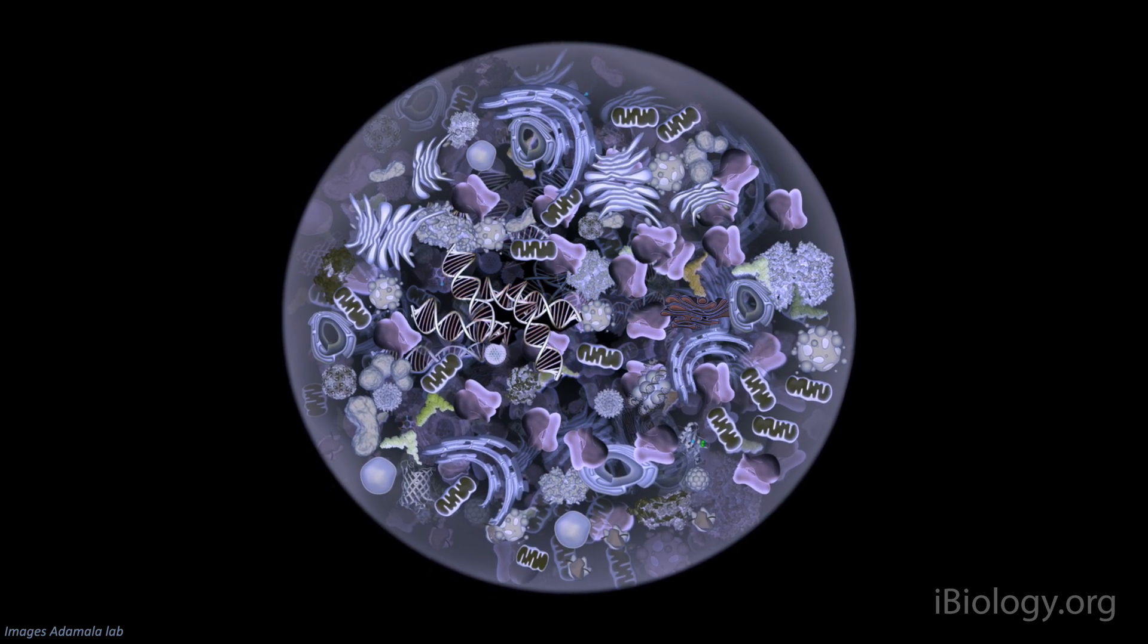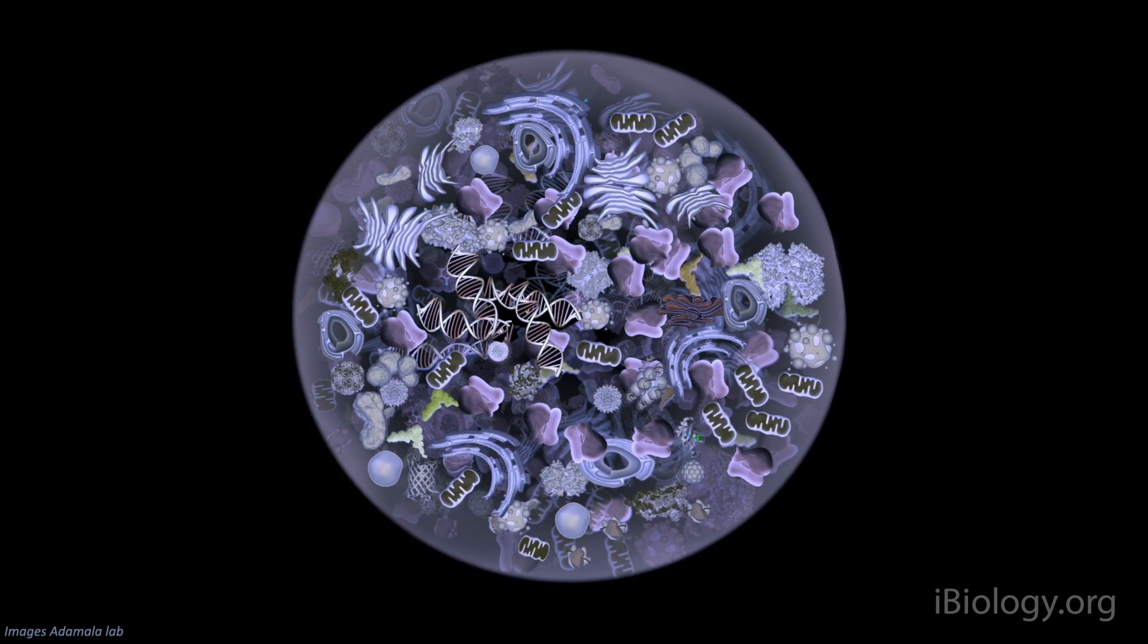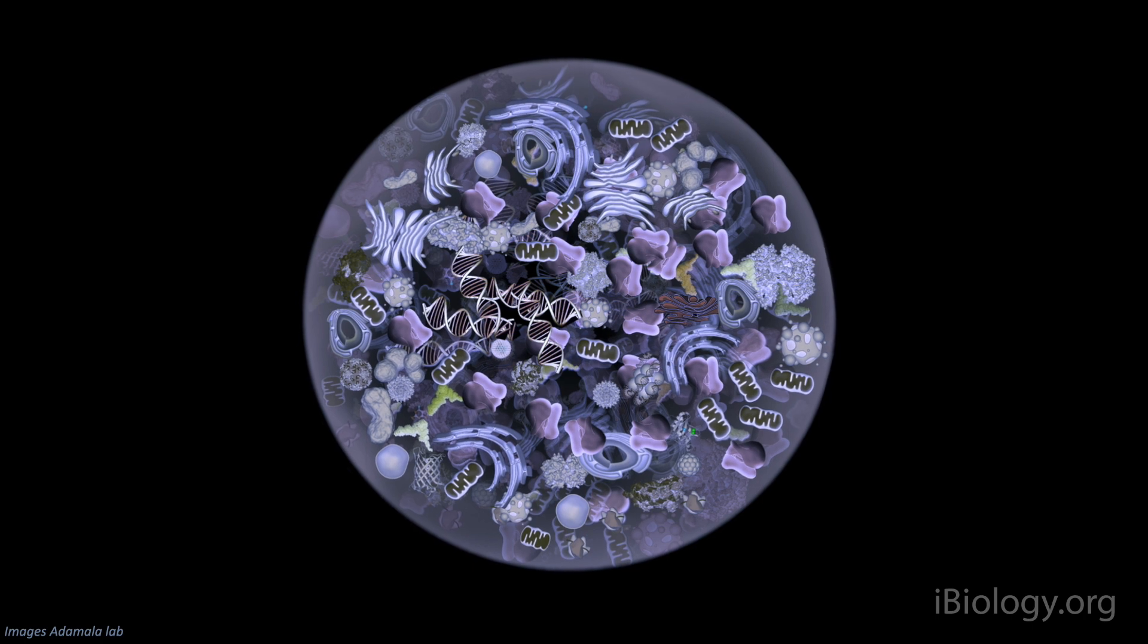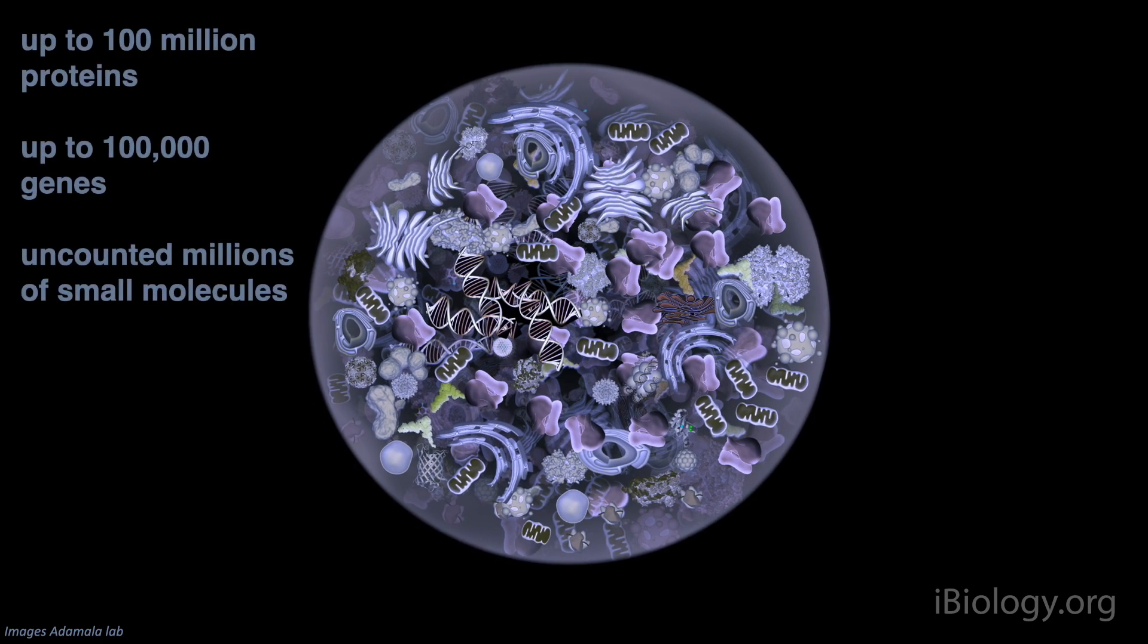We don't fully understand how even that one type of cell really works, because cells are so complex. They're crowded with proteins, nucleic acids, and small molecules. Millions of person-years have been spent studying biochemistry, yet we still don't have a complete map of even a single type of life cell.